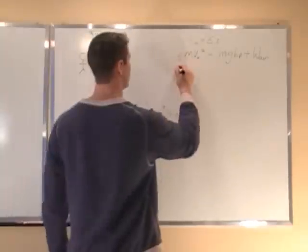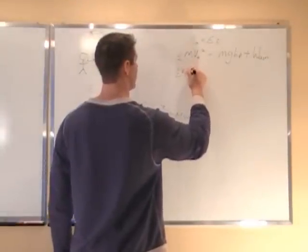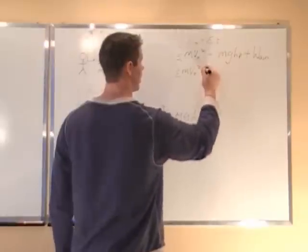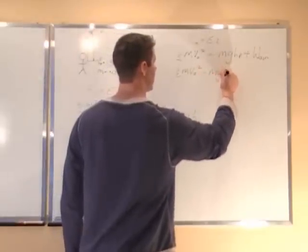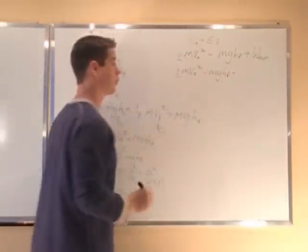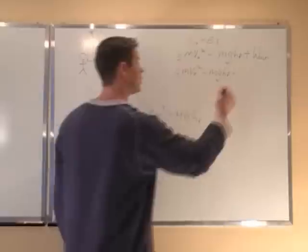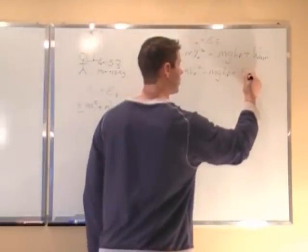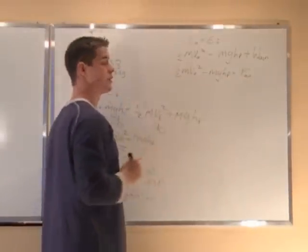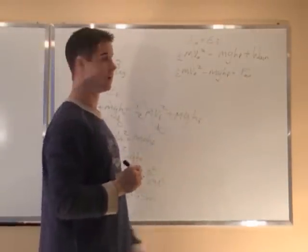So we have 1/2 m v-naught squared. I'm going to subtract mgh h final on this side. This is the work done by the air. This is force of air resistance times the distance, and we know the distance to be 9 meters.